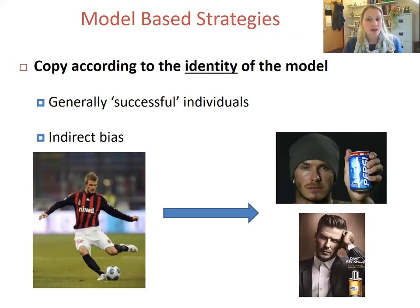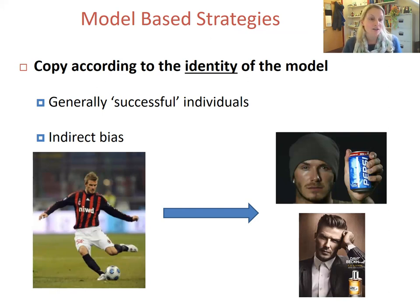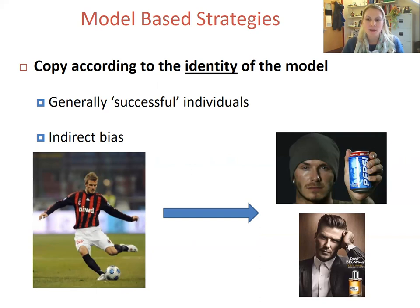Model-based social learning strategies are also known as indirect biases, because traits of apparently successful or high-status individuals are copied irrespective of whether their success or status was influenced by that specific trait. Our tendency to display model-based biases is actually taken advantage of in marketing and advertising. For example, David Beckham is very famous and prestigious due to his footballing skills, yet due to model-based bias, his identity can be used to encourage us to adopt products despite the fact that he likely knows no more about fizzy drinks or aftershave than anyone else.